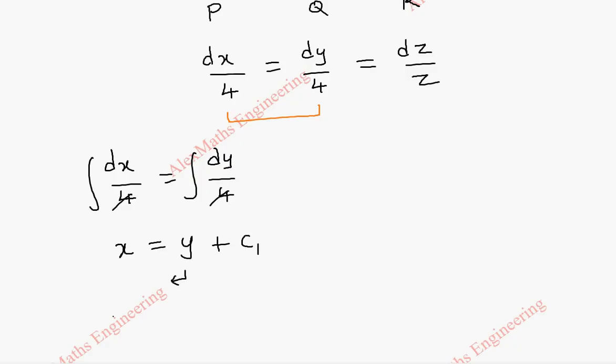Taking y to the other side, x minus y is c1. Now grouping the other two terms we get dy by 4 equal to dz by z.